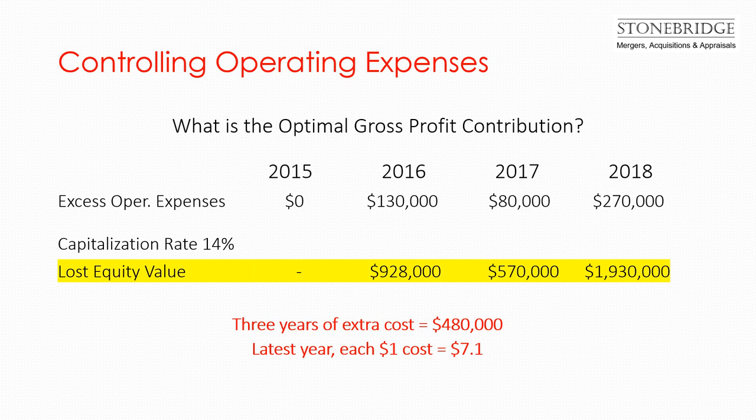The company incurred a total of $480,000 of added cost in the past three years, which reduced profit by the same amount. On a multiple basis, the company is worth 7.14 times each dollar of profit. In case some are wondering how we arrived at this multiple, we divide 1 by the 14% cap rate — that is the price-earnings multiple.